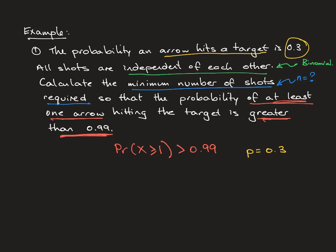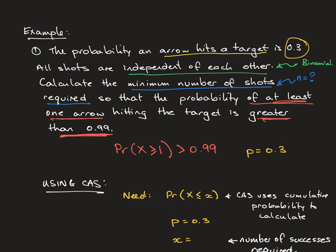Let's do it using CAS first. To use inverse binomial n on our CAS calculator, we need the value for the probability that x is less than or equal to some value, because the CAS calculator uses cumulative probability. It calculates from 0 up. So you always need to be aware of this — what you're looking for is that it starts from 0 and goes up to x, not from x going to 1.